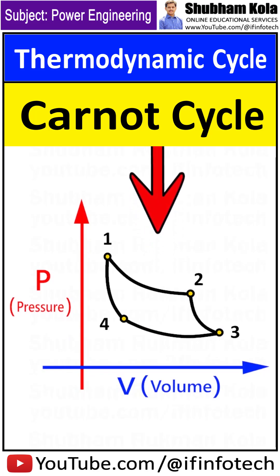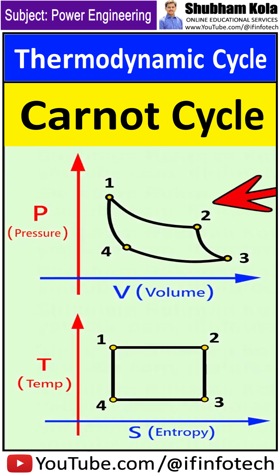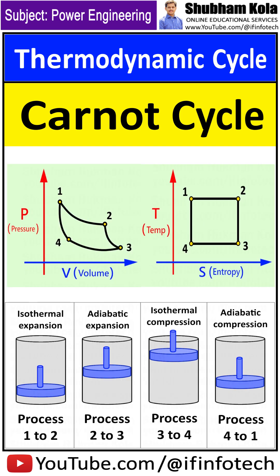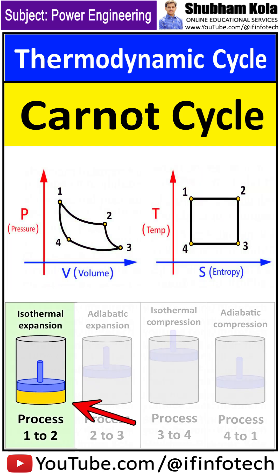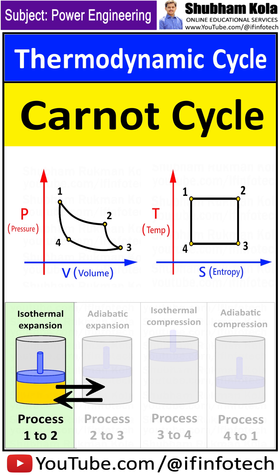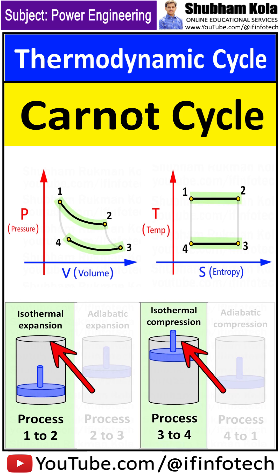Thermodynamic cycles on which an engine produces power are called power cycles. The first is the Carnot cycle, which is an ideal cycle proposed by French physicist Sadi Carnot in 1824. In the Carnot cycle, ideal gas is used as a working medium, there is no friction between the piston and cylinder wall, and no heat transfer between the surrounding and the system. Heat addition and heat rejection are carried out at constant temperature, due to which the Carnot cycle is also known as the isothermal cycle.